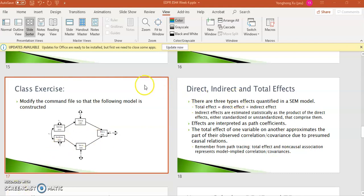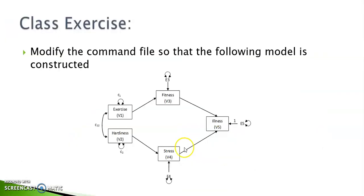The way you interpret the direct, indirect, and total effect is the same as we interpret regression coefficient values. Now I'm going to use this model as an example to show you how to get the values of those effects from the output file and put them in the table.